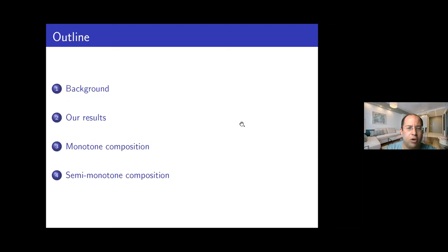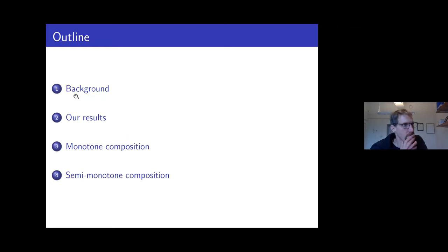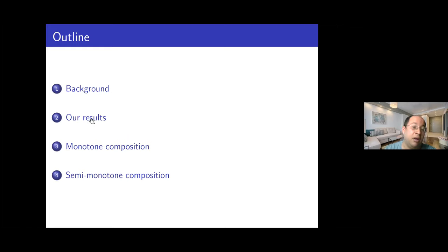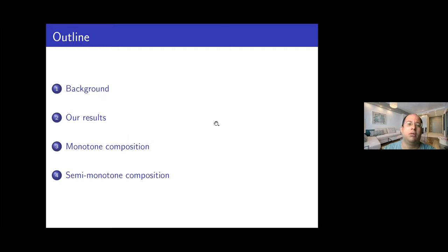The talk will have four parts: I'll describe the background about this conjecture and the current status of research, then describe our new results. Our results have two main parts: one about monotone composition and the other about semi-monotone composition. I'll discuss each in a separate section. Let's start by describing the background.